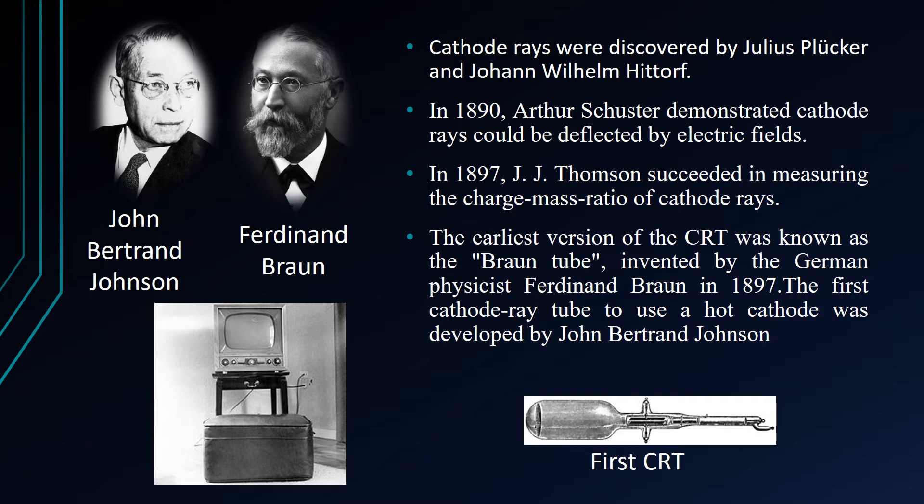Cathode rays were discovered by Julius Plucker and Johann William Hettoff. In 1890, Arthur Schuster demonstrated that cathode rays could be deflected by an electrical field, and William Crookes showed that they could be deflected by a magnetic field.